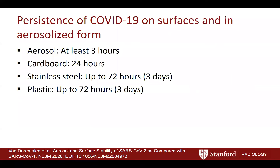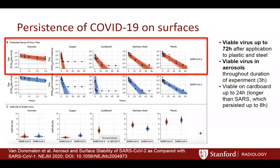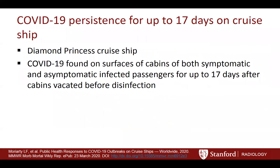COVID-19 lasts a very long time on surfaces: up to three days on stainless steel, three days on plastic, 24 hours on cardboard, and at least three hours in aerosolized form — and it could potentially persist longer since that was just when researchers stopped studying. Data from the Diamond Princess cruise ship showed COVID-19 lasted up to 17 days in the cabins of both symptomatic and asymptomatic infected patients.